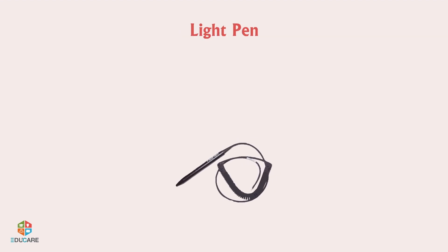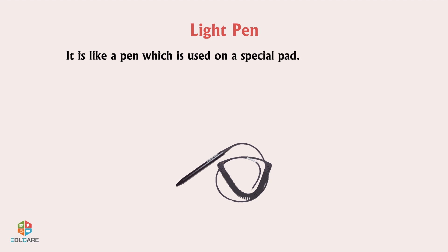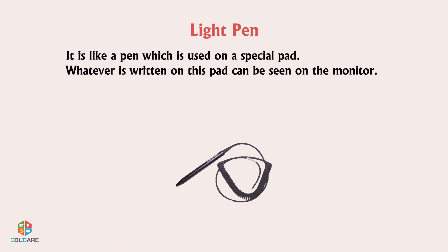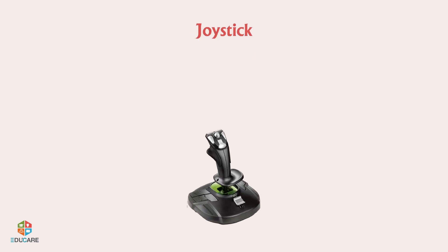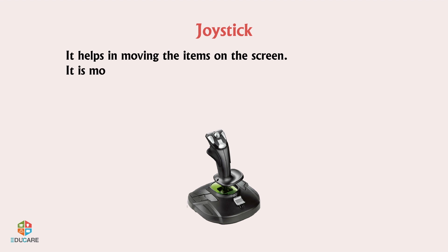Light pen: It is like a pen which is used on a special pad. Whatever is written on this pad can be seen on the monitor. Joystick: It helps in moving the items on the screen and is mostly used for playing games.